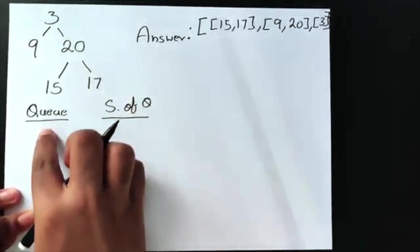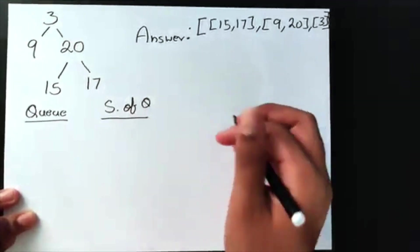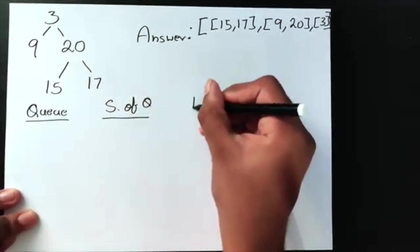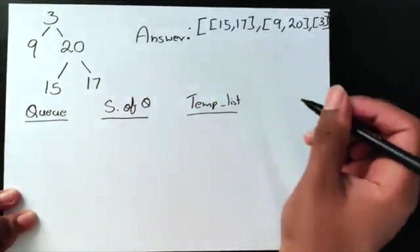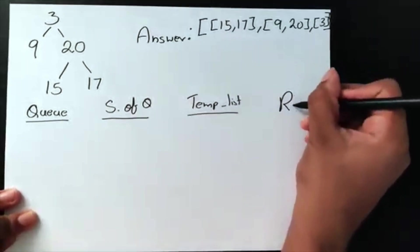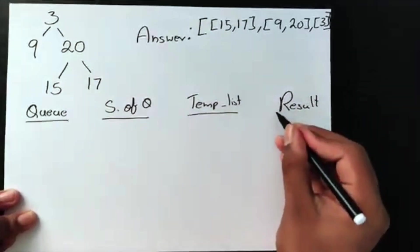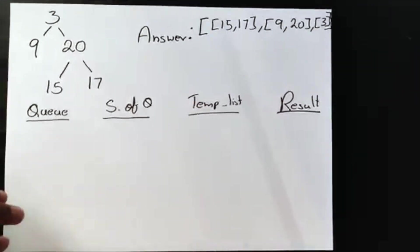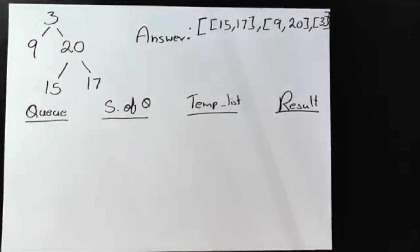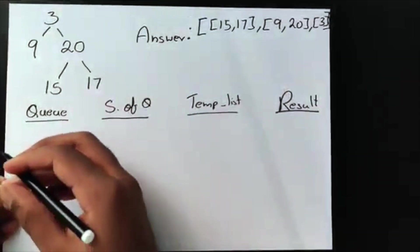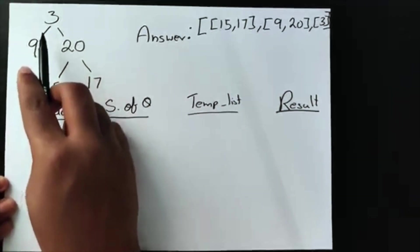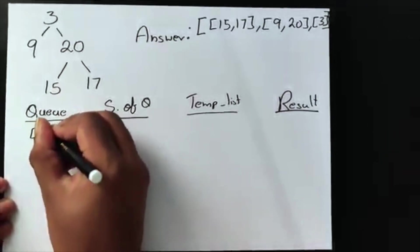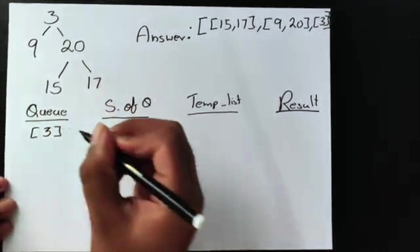Next we're going to have a temporary list, and then our main final variable is going to be our results list — that's our final answer. Our first step is going to start off with the queue, which is going to contain the root. In this case the root is 3.